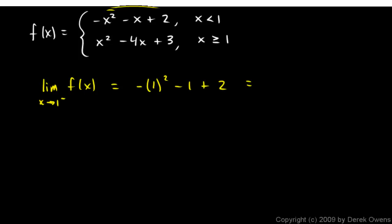So this is 1 minus 1, or excuse me, negative 1 minus 1 plus 2. That's 0. And then let's think about the limit as x approaches 1 from the right.